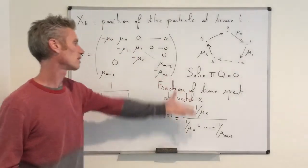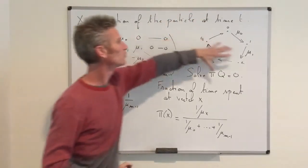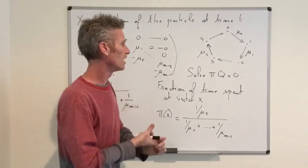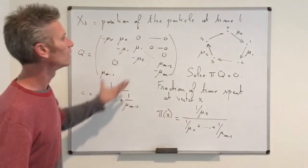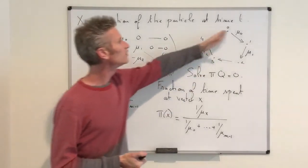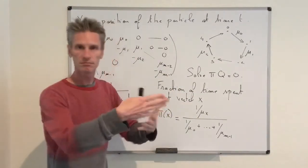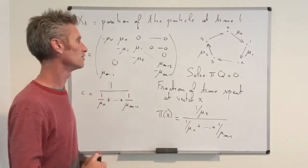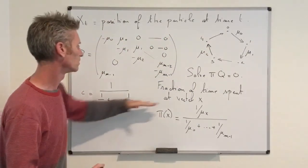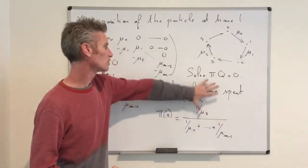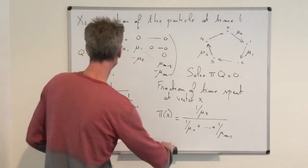This is the typical approach to find the fraction of time spent at a vertex: you do the directed graph representation, argue that the system is irreducible, and if the state space is finite you directly conclude positive recurrence and the existence and uniqueness of the stationary distribution. If the state space is infinite, you need to do a bit more work and really solve πQ = 0 carefully. Once you have the solution, you extract from the stationary distribution the fractions of time spent in each state.